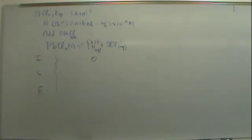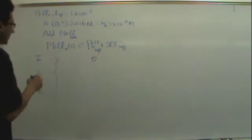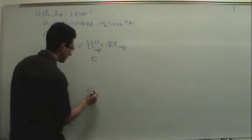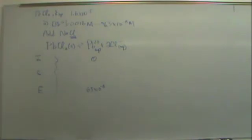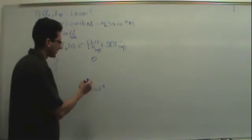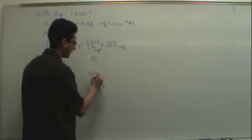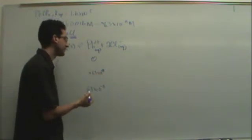Now we're going to 6.3 times 10 to the minus 8 at equilibrium. So really, that number is the number you want down here. That's our equilibrium concentration for that one, which is going to kind of be our X. This is going to be plus 6.3 times 10 to the minus 8.